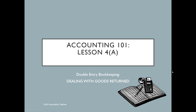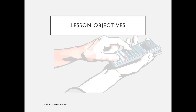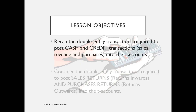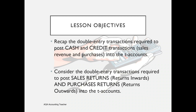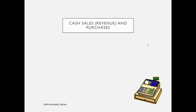Welcome to Accounting 101 Lesson 4A where I'm going to go through a recap of the cash and credit transactions for sales and purchases, and then show you how to deal with goods that are returned either by customers to us or to suppliers from us. We're going to recap the double entry transactions required to post cash and credit sales and purchases, and then consider the double entry transactions required when we need to post sales returns and purchase returns into the T-accounts.